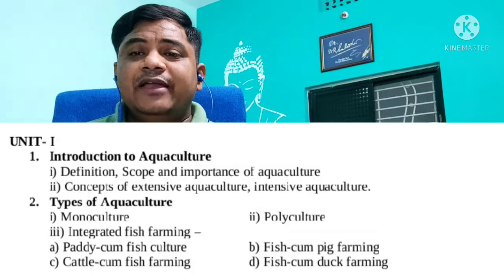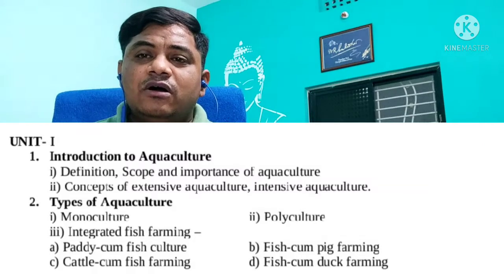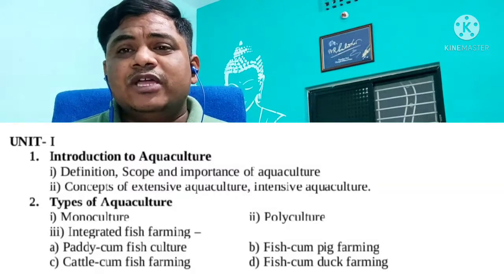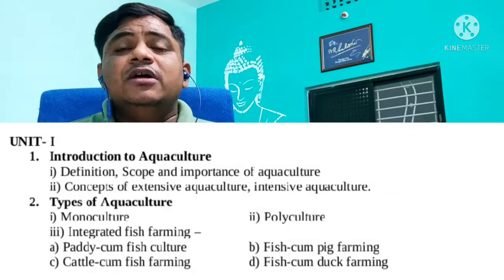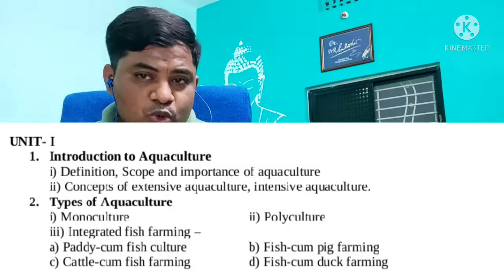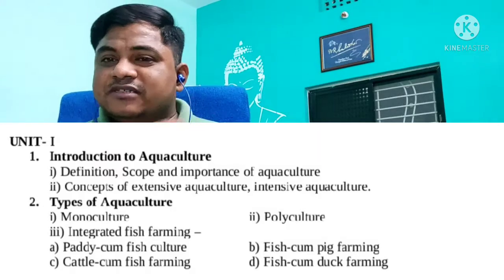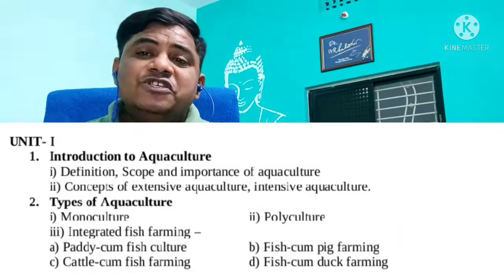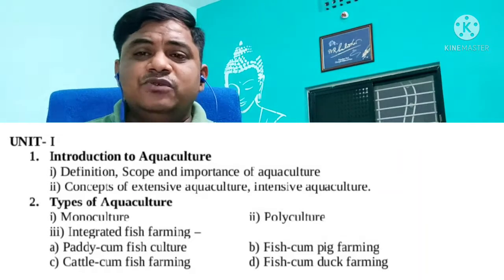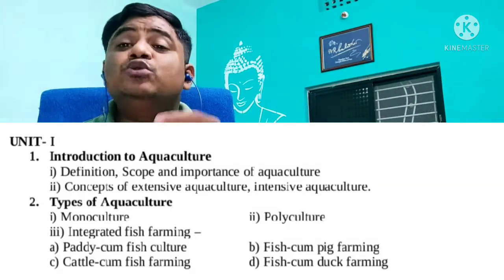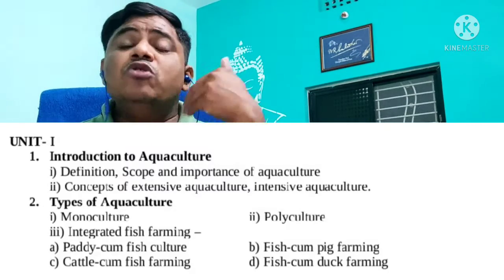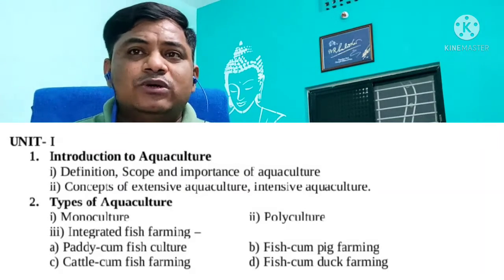Next in Unit One are the types of aquaculture. We discuss monoculture, where a single fish species is used for culture, and polyculture or mixed culture. In polyculture, Indian Major Carps (IMC) are cultured along with exotic carps such as silver carp, grass carp, and common carp. One or more fish species cultured together is called polyculture.